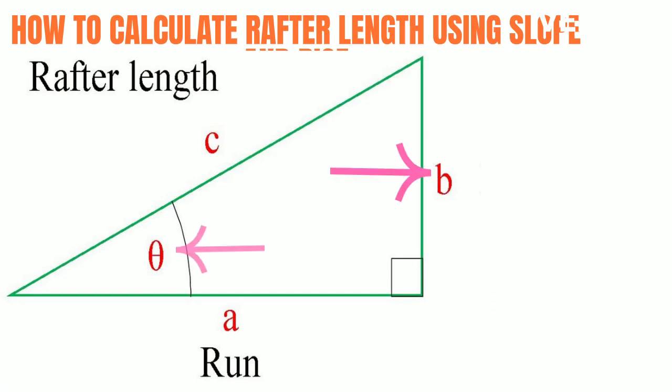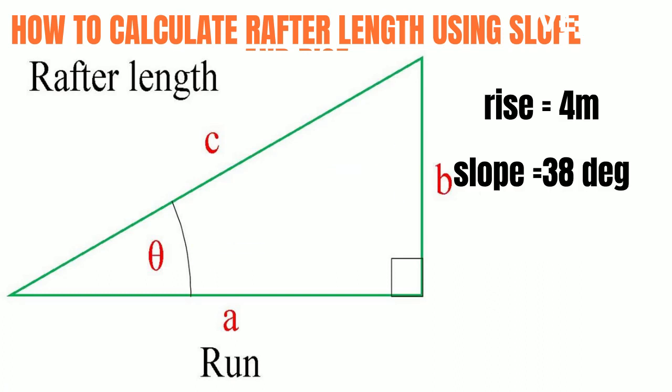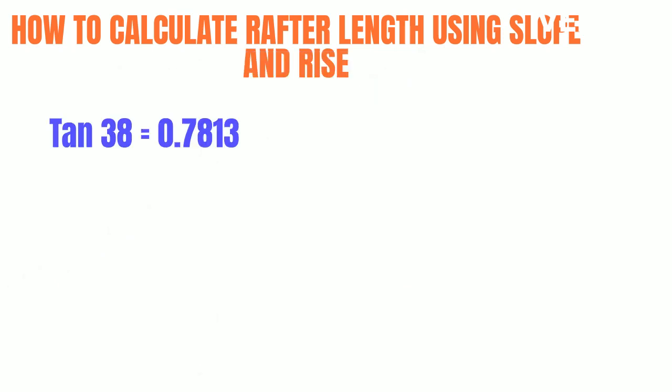Here is the slope and this is the rise. The rise is 4m and the slope is 38 degrees. Now let's find the tangent of the slope — that is tangent of 38 degrees — which is 0.7813.